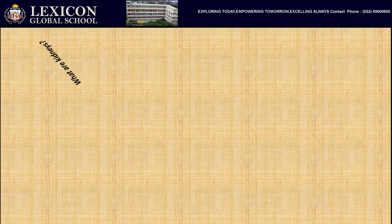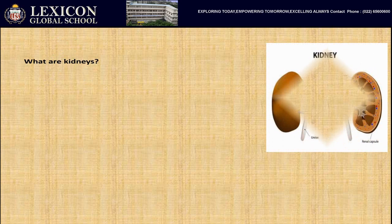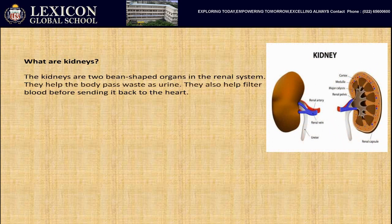What are kidneys? Kidneys are two bean-shaped organs in the renal system. They help the body pass waste as urine and also help filter blood before sending it back to the heart.